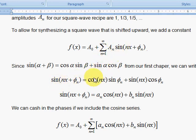Here we have the cosine of α will be the cosine of nx, and the sine of β will be the sine of φ_n. And over here we'll have the sine of nx times the cosine of φ_n. Now I can consider the sine of φ_n as a coefficient a_n that multiplies cosine nx, and my cosine φ_n is a coefficient b_n that multiplies my sine nx.